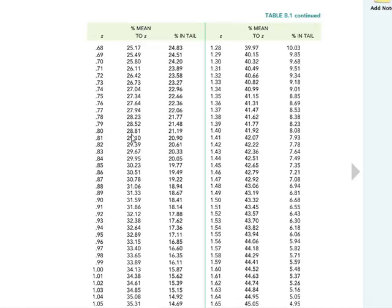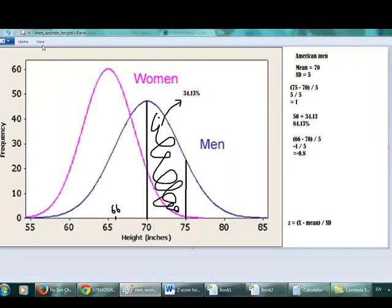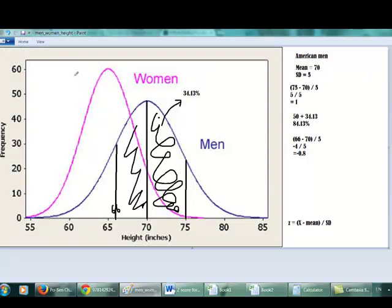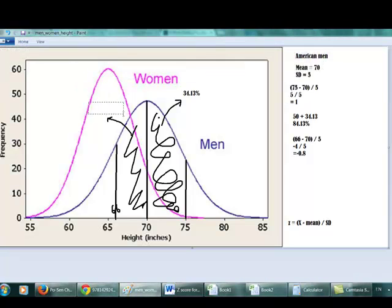Let's just find this positive value 0.80. Then this percentage is 28.81. That means this area right here is 28.81% compared to the whole population.